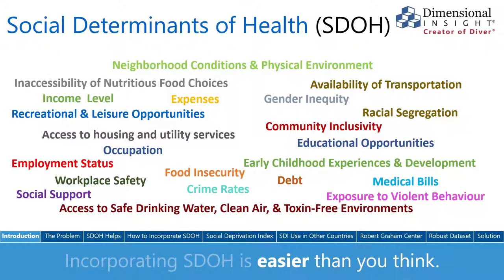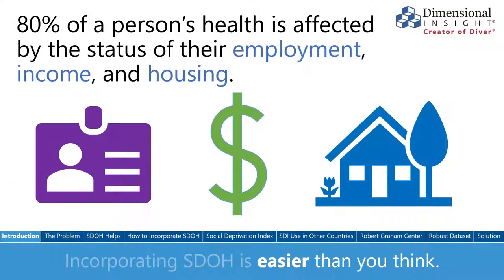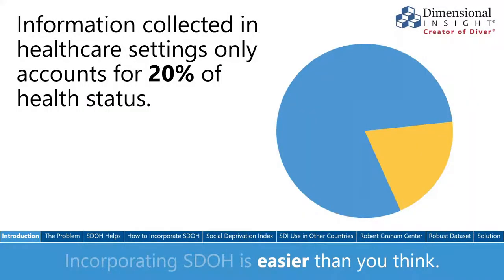Social determinants refer to the physical and social circumstances that impact a person's well-being, such as employment, income, housing, and access to transportation. It's become increasingly clear that these factors have an even greater impact on a person's health than the information routinely collected in a healthcare setting. In fact, social determinants account for 80 percent of an individual's health, but information collected in the healthcare setting only accounts for 20 percent of health status.